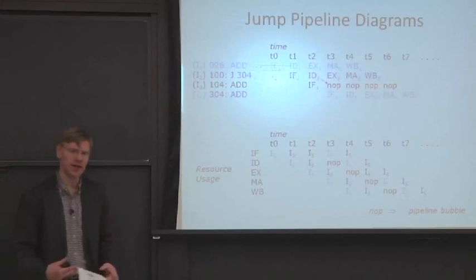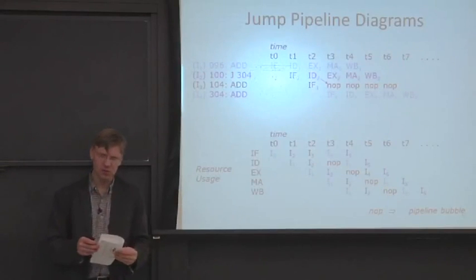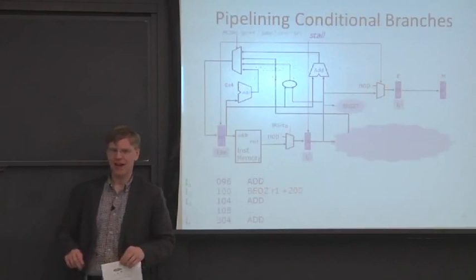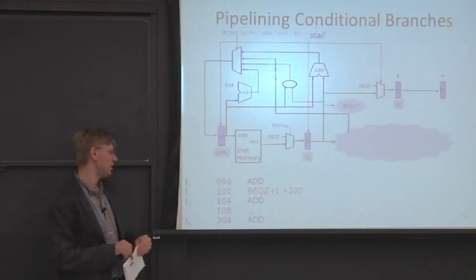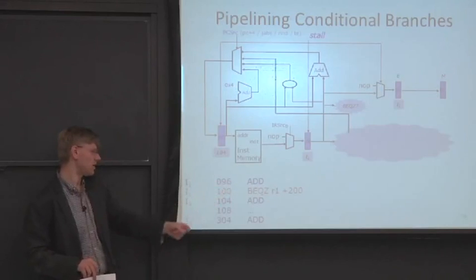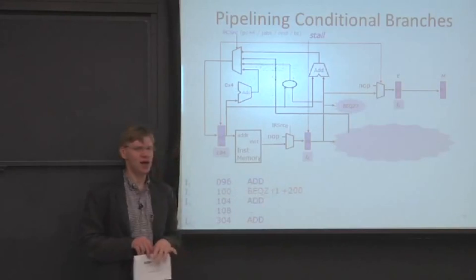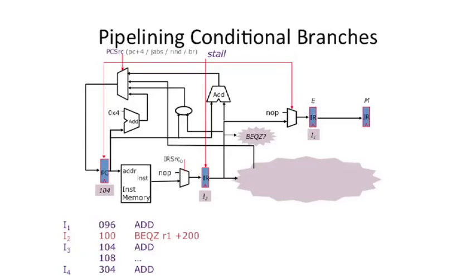Let's look at a more complicated case. We talked about control hazards due to jumps. Let's put the control hazard one cycle later, and a good example of that is a conditional branch. We have a piece of code with an add and a branch, branching 200 bytes into the future. Branches on MIPS are relative to the subsequent instruction, so it's PC plus 4 plus the offset, meaning we end up at address 304.